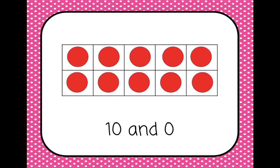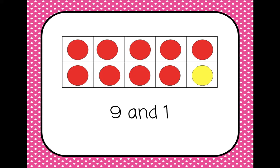On this 10 frame you can see 10 red counters and 0 yellow counters, so 10 and 0 are friendly numbers — two numbers that add up to 10. Here you can see that one of the red counters is now gone and we've added a yellow counter, so we have nine red and one yellow. Nine and one are friendly numbers.